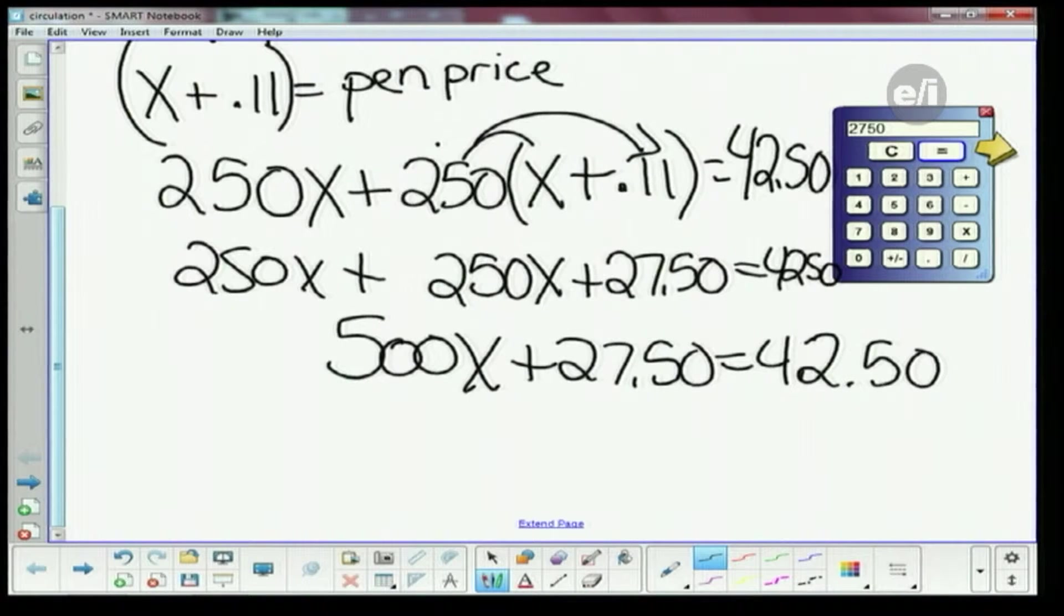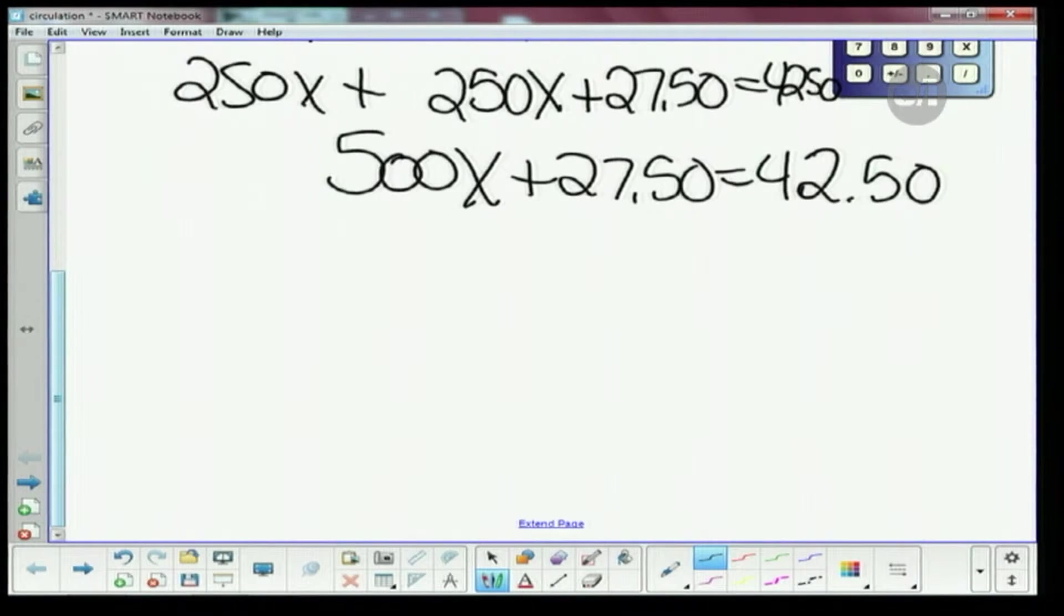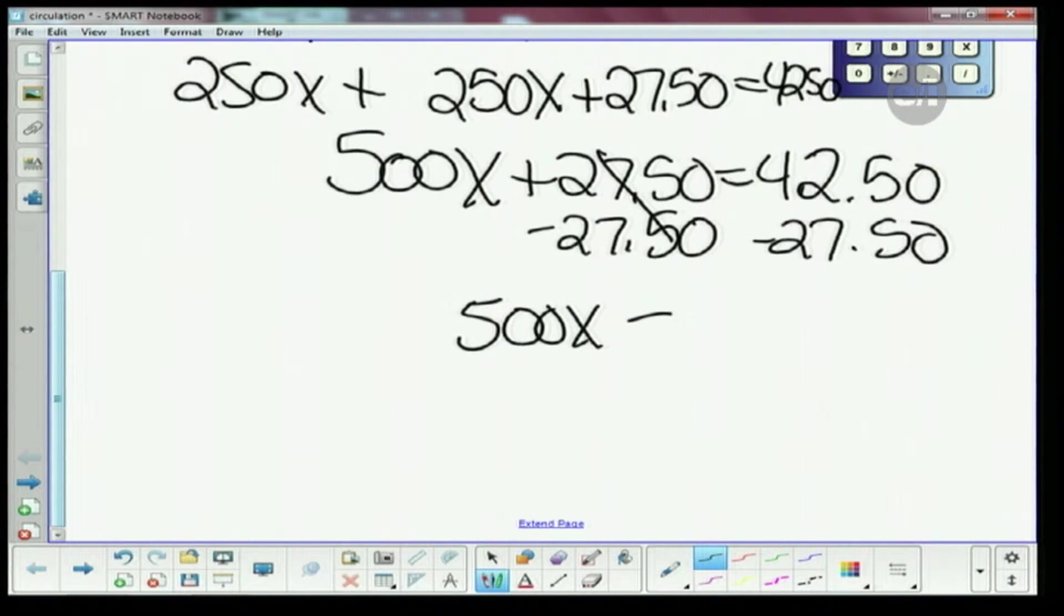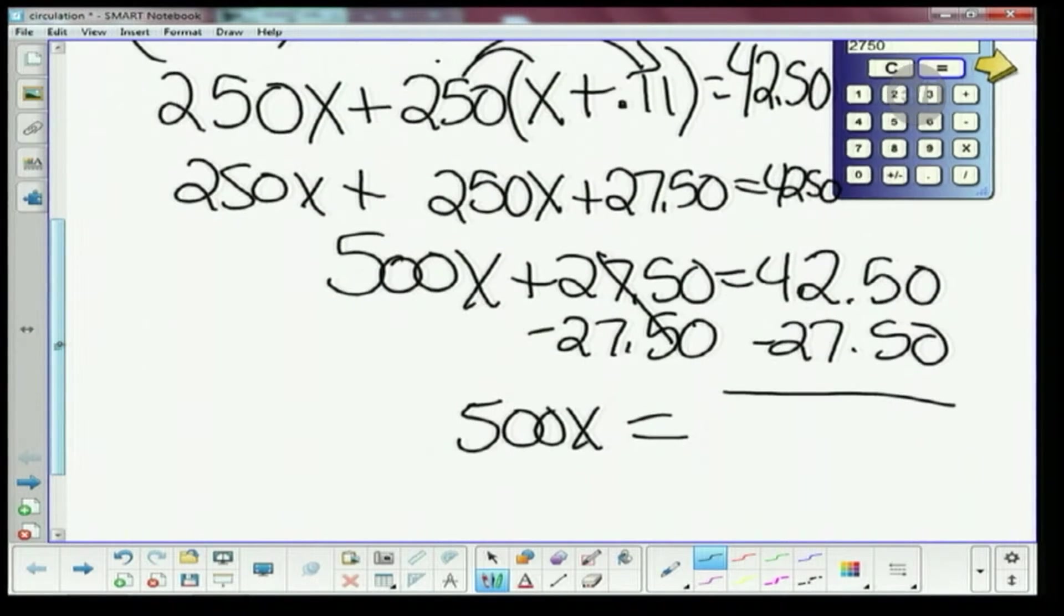And then I'm gonna bring down the 27.50, and it's gonna equal $42.50. Alright, I'm hoping you got some good algebra skills. What's the next step? We have to get rid of the plus 27.50, right? We're gonna take away 27.50 from one side and we're gonna take away 27.50 from the other side. So we get 500X is equal to - and we have to do $42.50 minus $27.50. I'm not gonna use the calculator, that one's pretty easy.